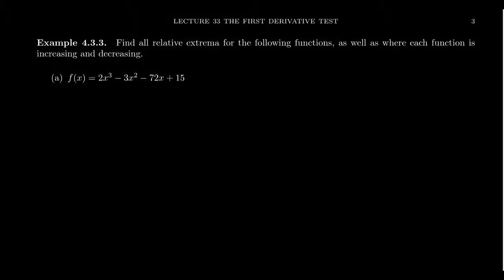In this video, we're going to find all of the relative extrema for three functions, and we're also going to determine on what intervals these functions are increasing or decreasing. For our first example, we have the function f(x) = 2x³ - 3x² - 72x + 15. So we have this polynomial function.